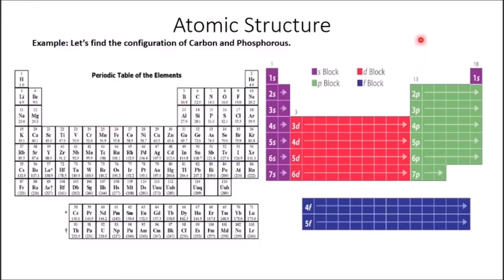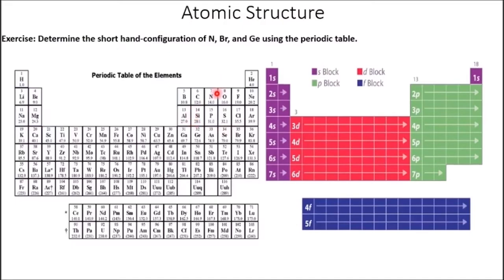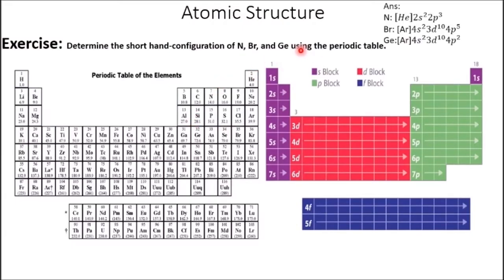Using the periodic table for carbon and phosphorus: carbon is in the 2p2 position, so its valence configuration is 2s2, 2p2, and its full shorthand is [He] 2s2, 2p2. For phosphorus, moving across period 3: 3s1, 3s2, 3p1, 3p2, 3p3 — so phosphorus's valence electron configuration is 3s2, 3p3. If you know the valence electron configuration, you can predict the vast degree of an element's chemistry because you know the valence it is most likely to adopt.